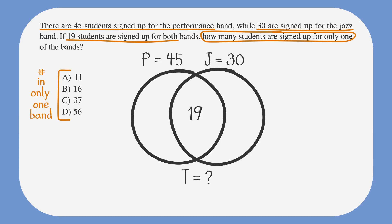Now let's get into solving this problem. We're asked to find the number of students that are members of only one band. The areas highlighted in yellow are either only in the performance band or only in the jazz band. So how many band members are only in the performance band?